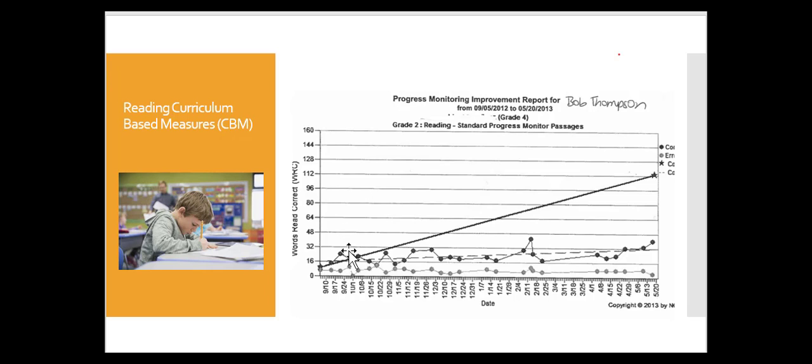In this case, we've got solid black circles as data points indicating the number of correct words per minute, light gray solid circle data points to indicate the number of errors that the student made on these timed, leveled oral reading passages. What we can see is a solid line ending in a star to show where the student's benchmark or target is by the end of the year.